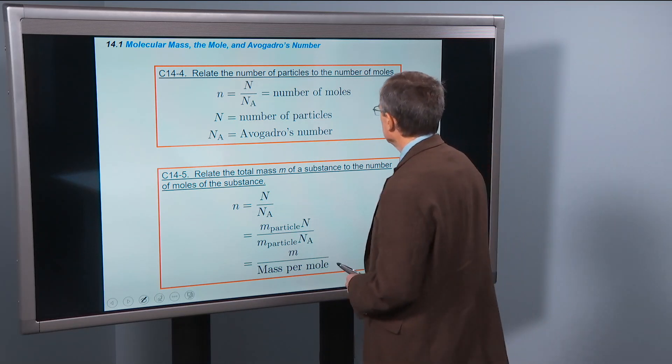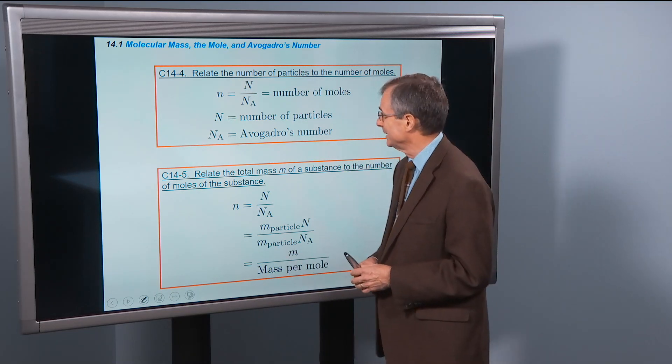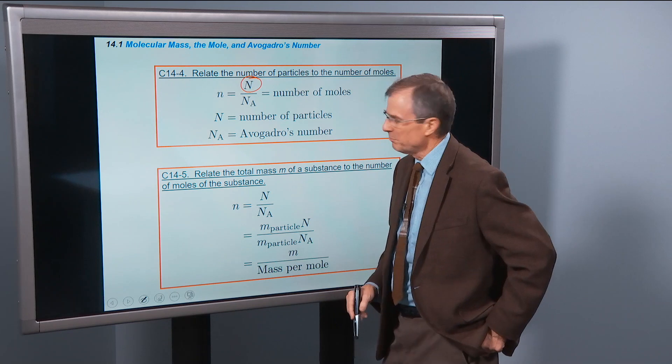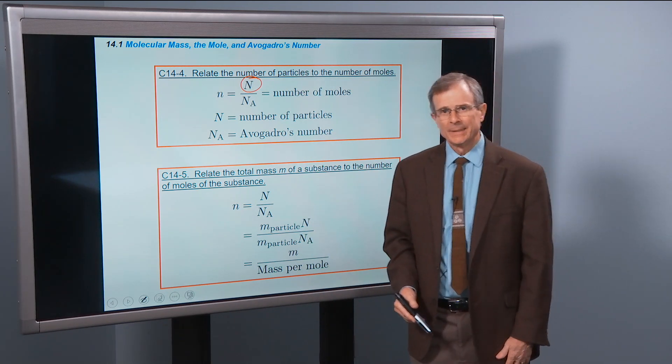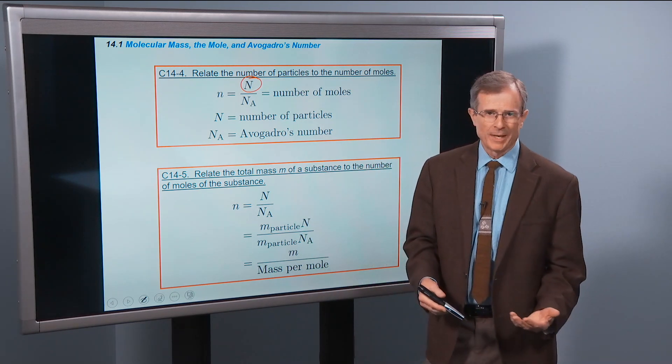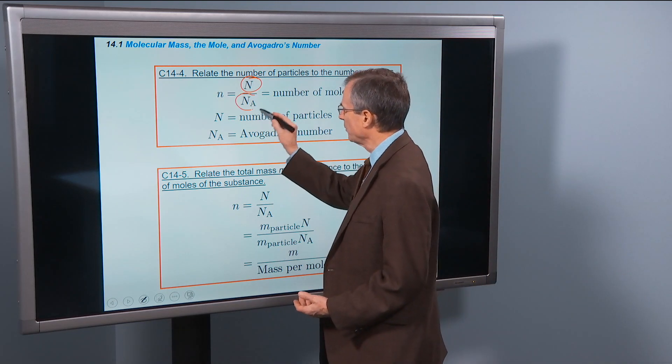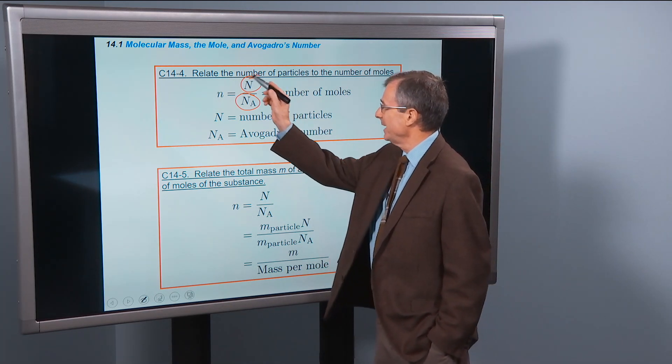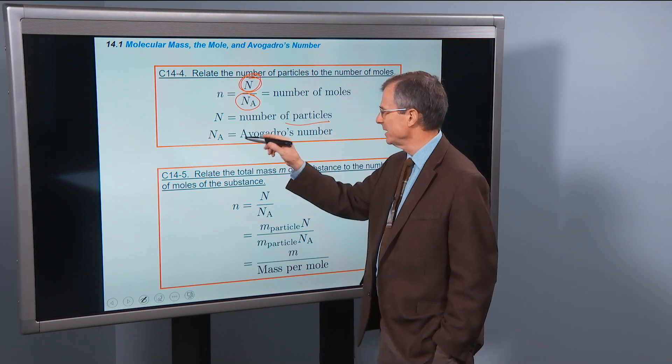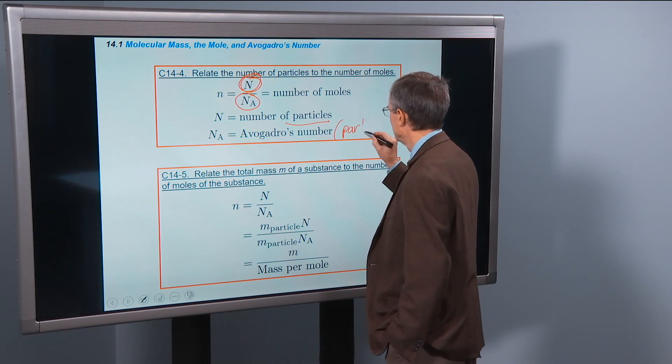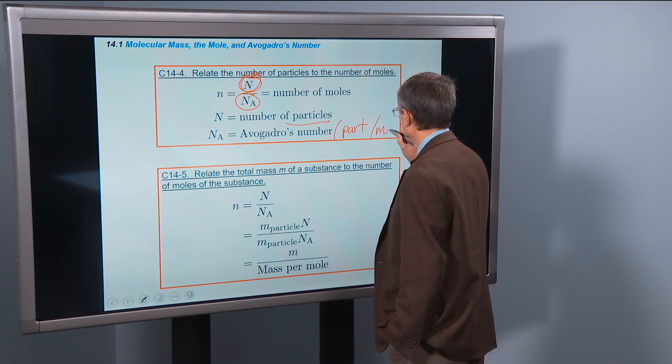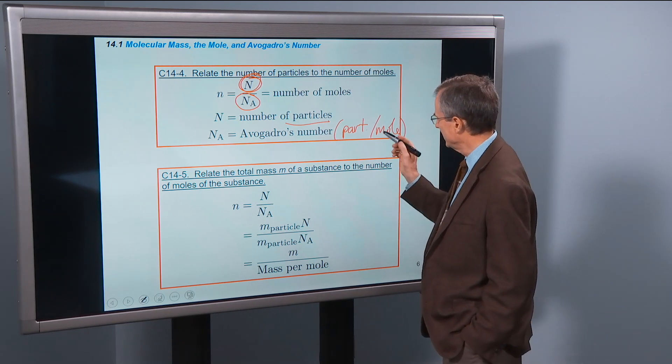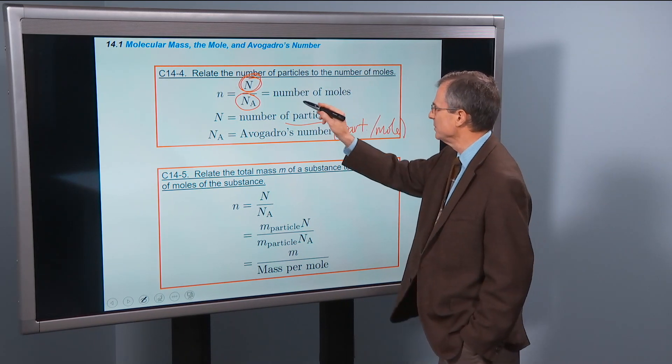Relate the number of particles to the number of moles. If you have a number, a whole bunch of molecules, and you want to know how many moles you have, we know that there's 6.022 times 10 to the 23rd particles per mole. So if we have N as the number of particles and divide by the number of particles per mole, then the particles cancel out in the numerator and denominator.